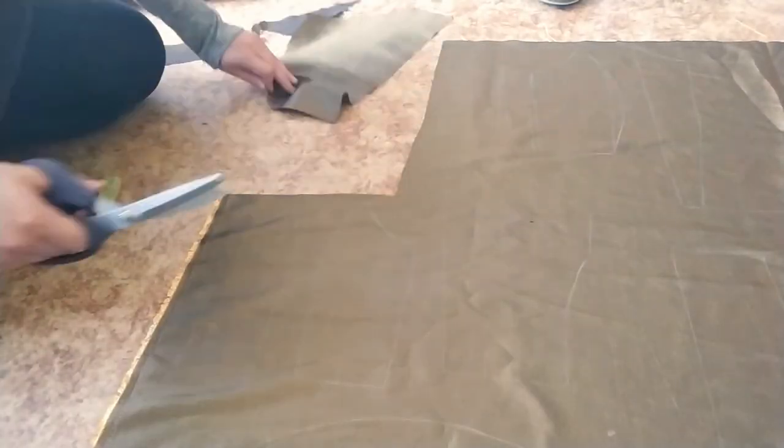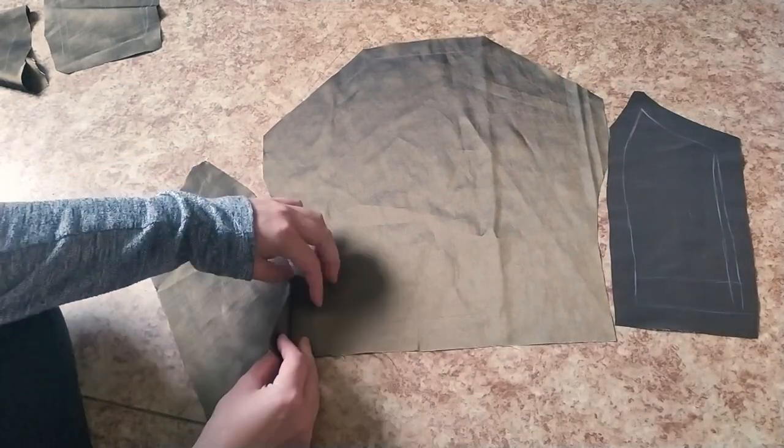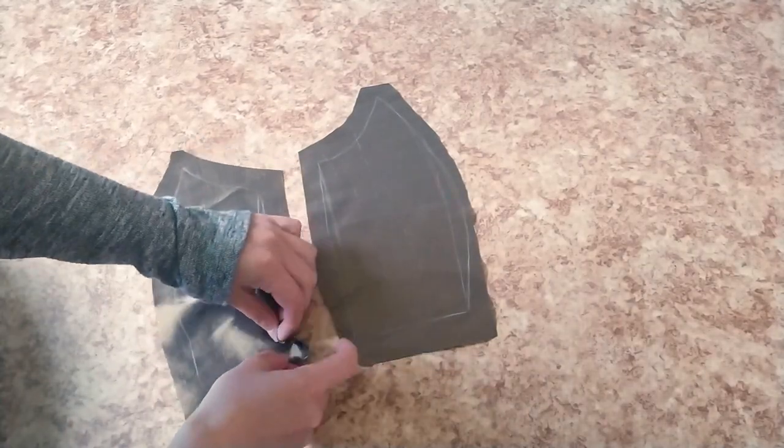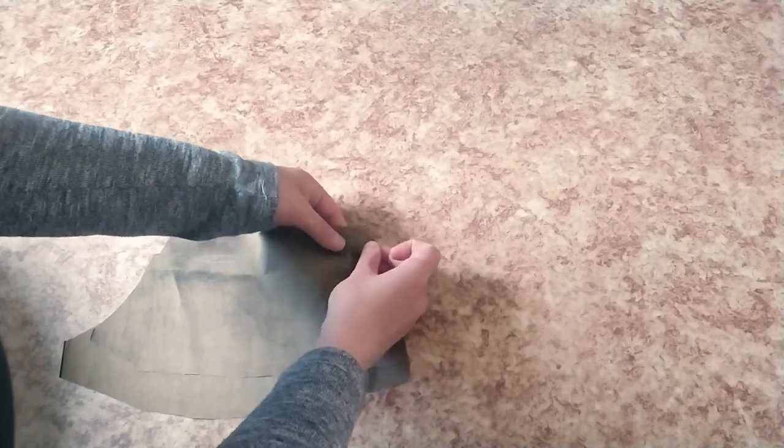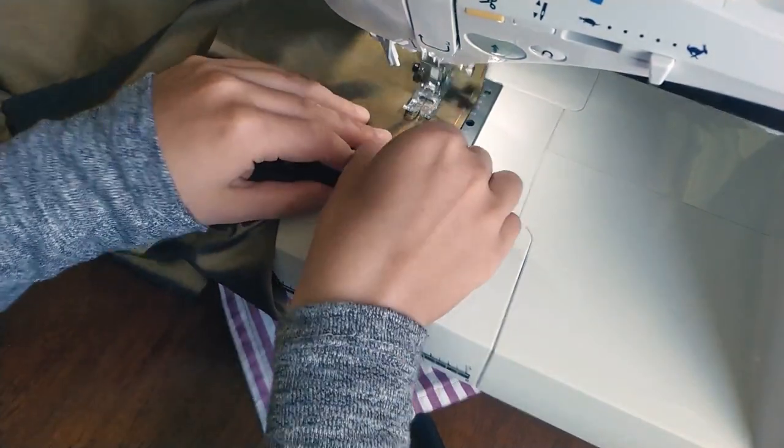After I cut out all bodice pieces, I pinned the back side panels to the center back with right sides together, then I pinned the back side panels to the front side panels. Then I sewed it together on my sewing machine.